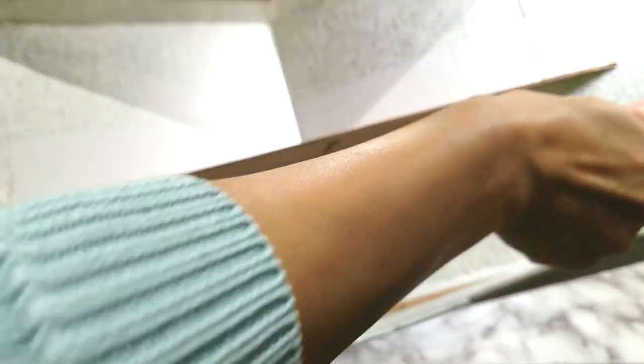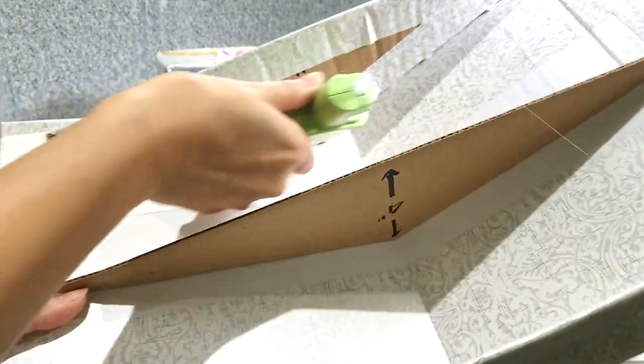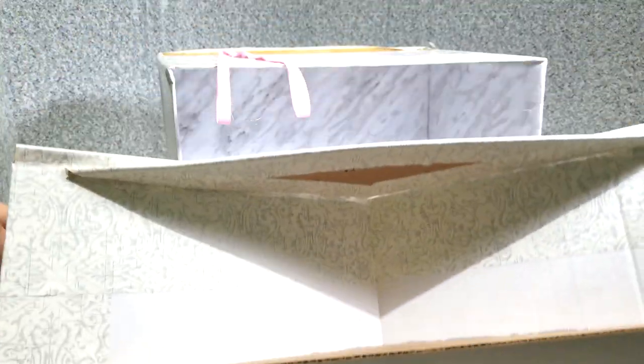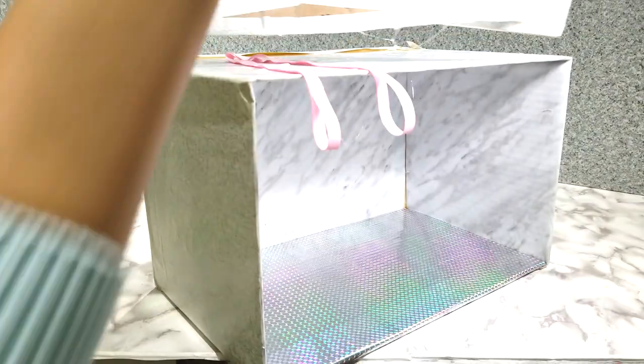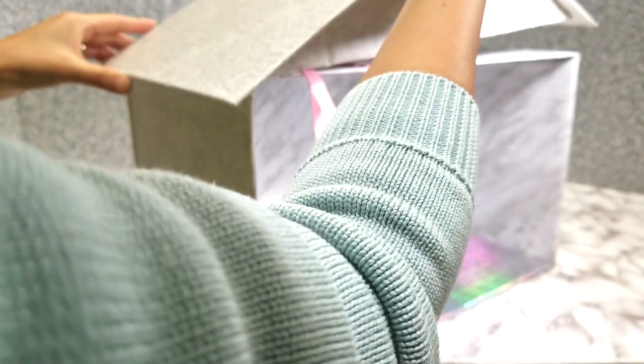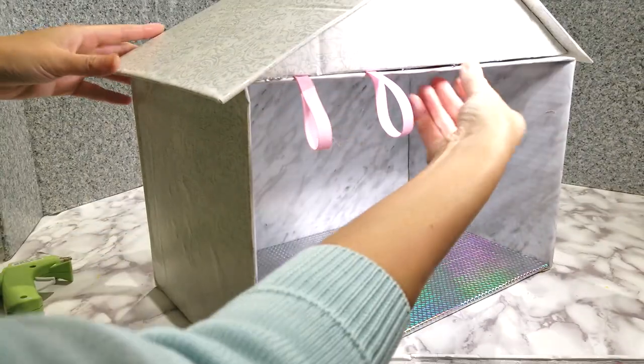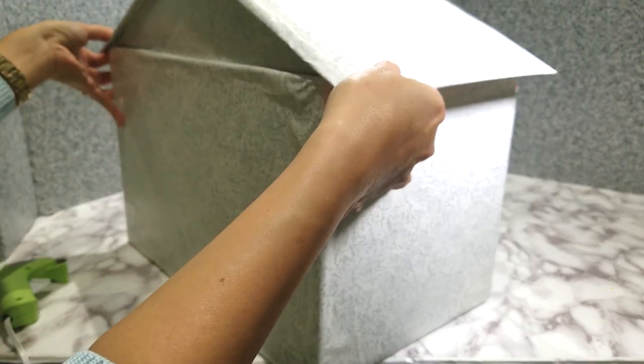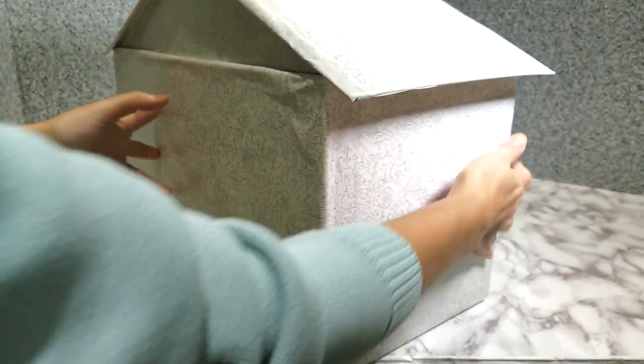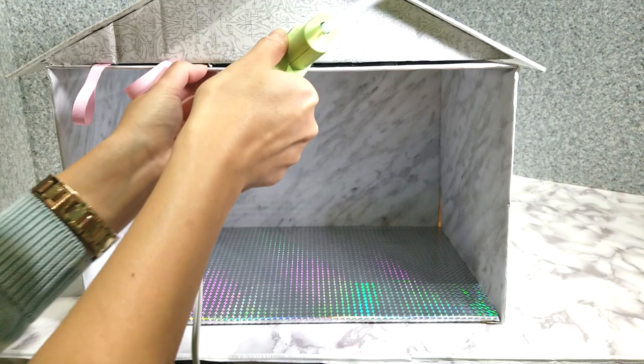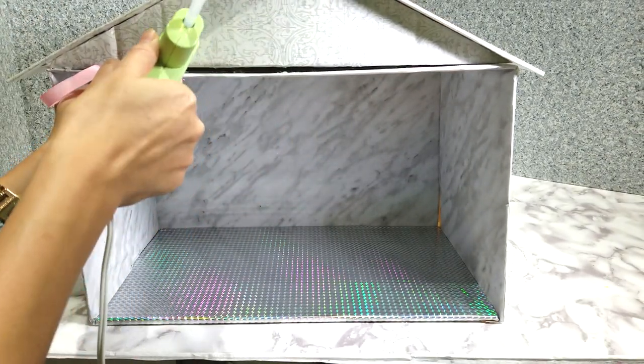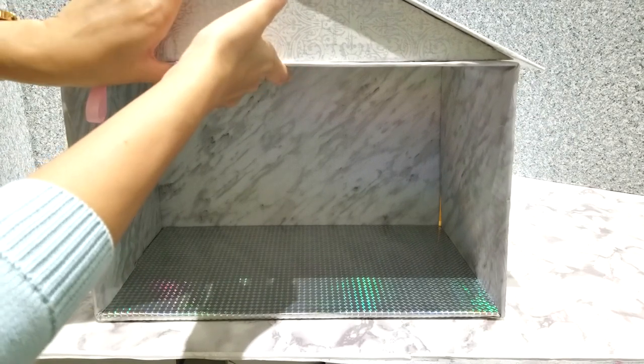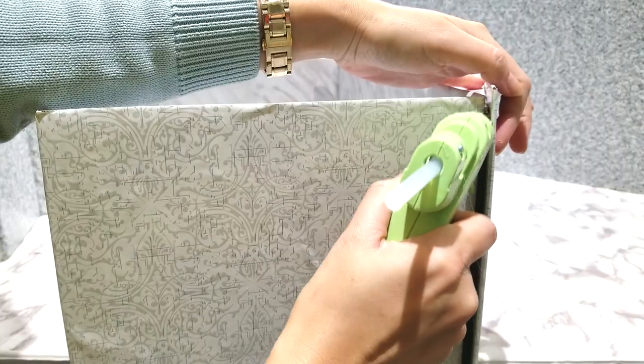I also add hot glue towards the inside just to secure all the pieces. Now I'm adding hot glue to the edges and mount it on top of the house. I apply hot glue along the edges, the front, back and the side, and also hold on to the pieces to attach them together.